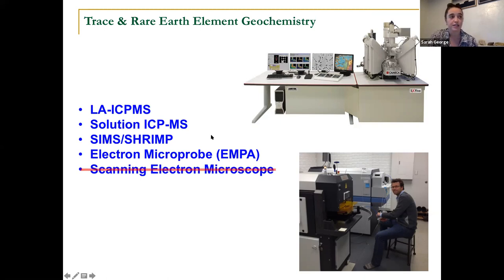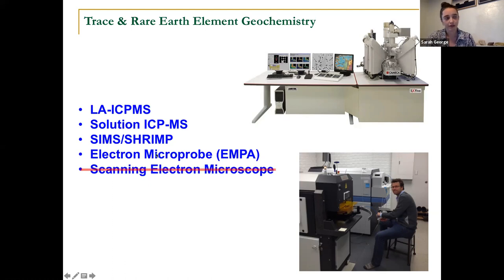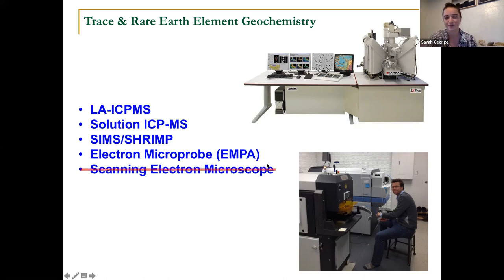You can also do it via solution ICP mass spectrometry — you probably get more precise trace and rare earth element compositions, but then you have to dissolve your zircons, which is a whole analytical challenge. You can do it on the SIMS where you get great spatial resolution, but throughput is much slower. One option if you've already dated a bunch of zircons is to go back with an electron microprobe. The limits of detection aren't quite as low, so you might suffer that way, but they're relatively cheap to use compared to laser ablation. Note that these analyses cannot be conducted on an SEM.